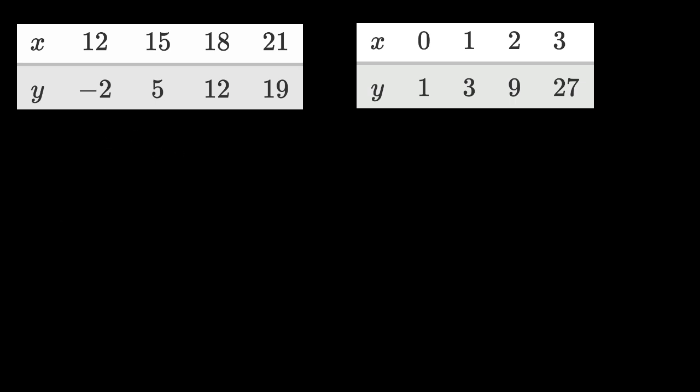So let's look at this first relationship right over here. And the key way to tell whether we're dealing with a linear or exponential or neither relationship is thinking about, for a given change in x, and you see each time here, we are increasing x by the same amount. So we're increasing x by three. So given that we are increasing x by a constant amount, by three each time...